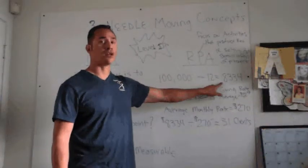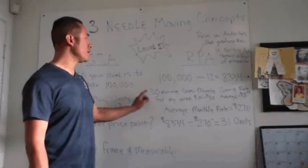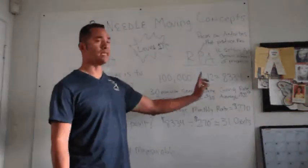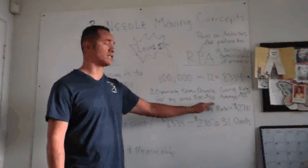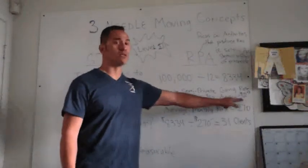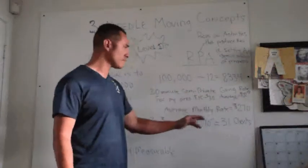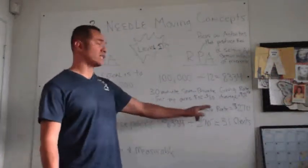So for example, $100,000 divided by 12 which would be 12 months equals $8,334. In my example would be for a 30-minute semi-private session. The going rate in my area is anywhere between $15 and $30 per session, so the average of that would be $22.50.